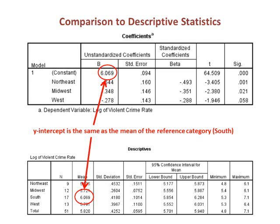We do not interpret the beta of a dummy variable as positive or negative. Rather, we interpret it relative to the reference category. The statistical significance is based on the null hypothesis that the difference between the reference category and the region is zero.